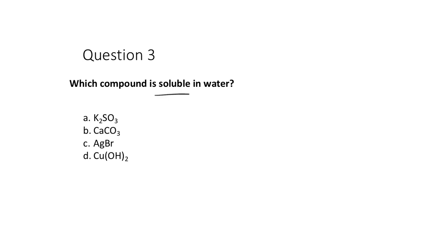Question: which compound is soluble in water? K₂SO₃ — anything with potassium is water soluble. Calcium carbonate is not soluble — for carbonate, only alkali and ammonium cations are soluble. PbBr₂ is one of our insoluble exceptions for bromide. Copper(II) hydroxide is not one of the soluble exceptions for hydroxide — most hydroxide salts, including with Cu²⁺, are insoluble. So the only soluble compound is K₂SO₃.